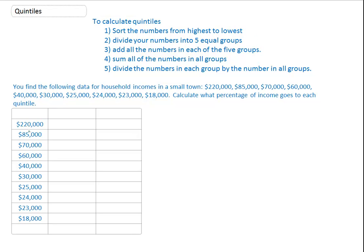Well, I sorted it from highest to lowest. We have the 220,000 on top, 18,000 on the bottom. And our question here that we're going to use to illustrate quintiles is, you find the following data for household incomes in a small town. And I've already put it so it's the highest to the lowest. And we need to calculate what percentage of income goes to each quintile.